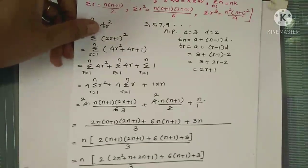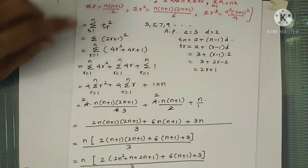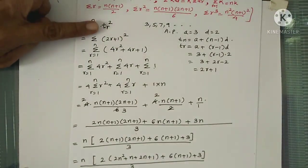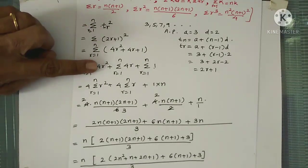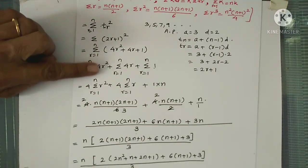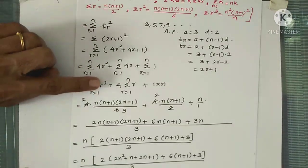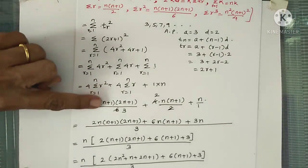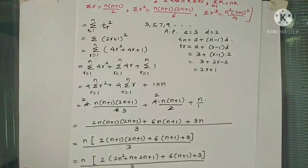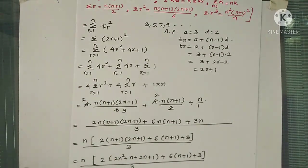Let's revise the steps: Step 1 is to find the rth term. Step 2 is to use properties of sigma notation, write the formulas, take LCM, and add those terms.